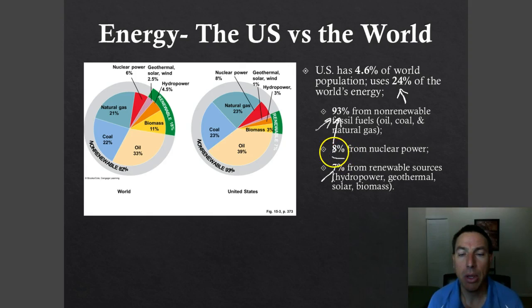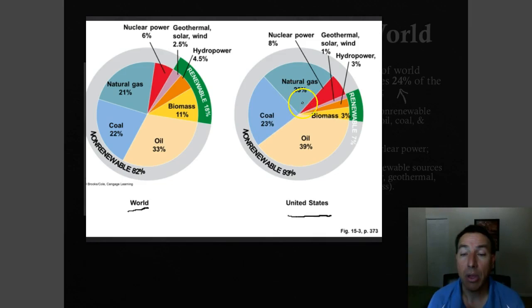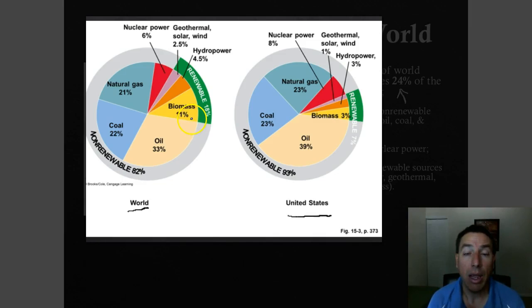If we look at our graphs comparing the world and the United States: oil is a huge one in the United States at 39% of our energy, versus 33% in the world. We also have a little larger coal and natural gas use. Where we're lacking compared to the world is biomass — meaning the burning of or using biomass to create energy, either in the production of alcohol or in the actual burning of it to produce heat. The rest of the world uses biomass much more than we do.